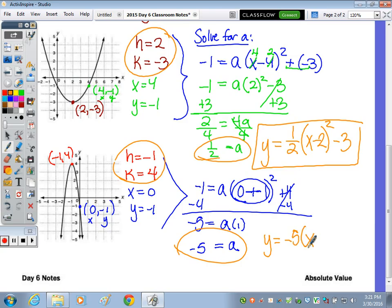Using the vertex and a, a is negative, which makes sense because it's narrow and upside down. We get y equals negative 5 times x minus h. And when you subtract a negative 1, it becomes plus 1. Also a shift left is positive. Squared plus 4.